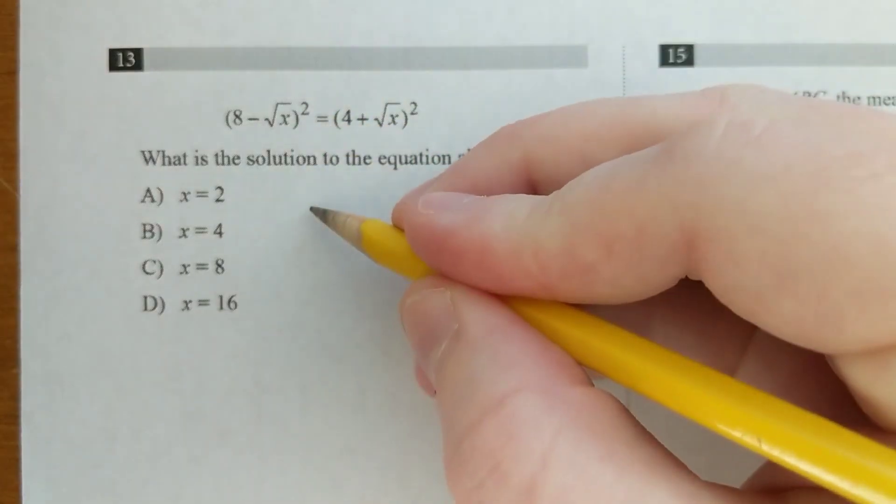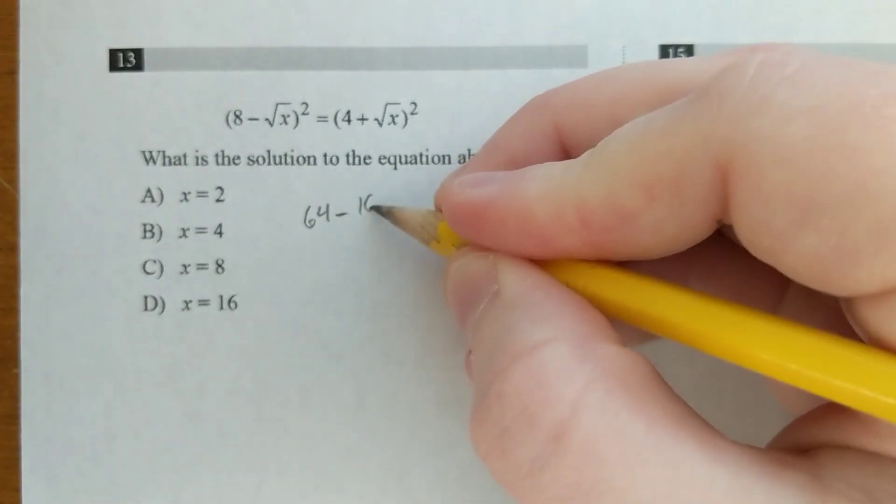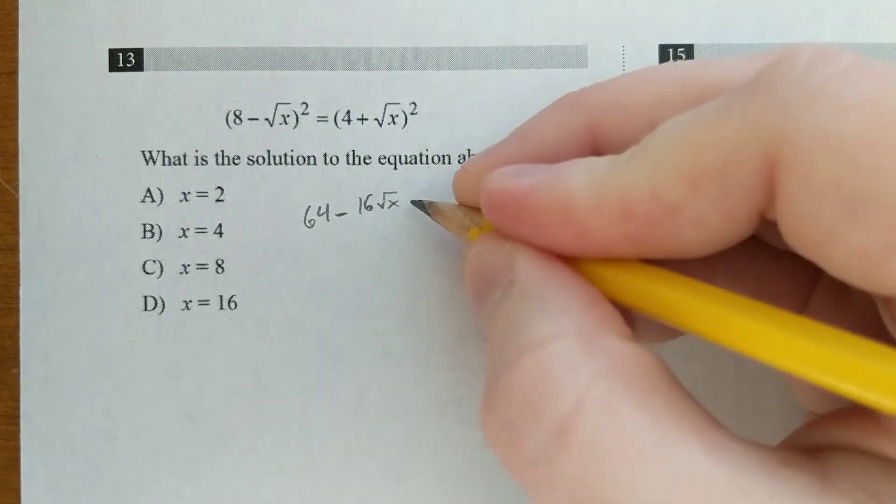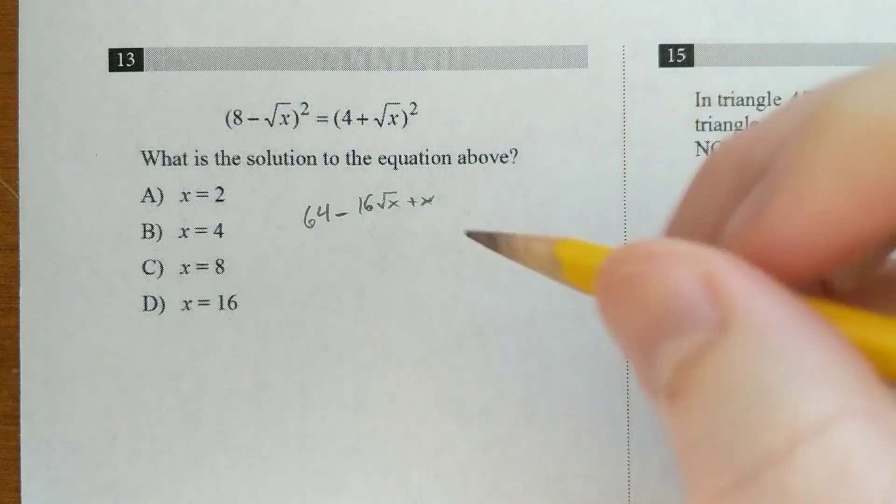On this one, you could square everything out, but it's going to get really nasty. You're going to have 64 minus 16 root x plus x, and then you're going to have something like that on the other side. You really don't want to deal with that.